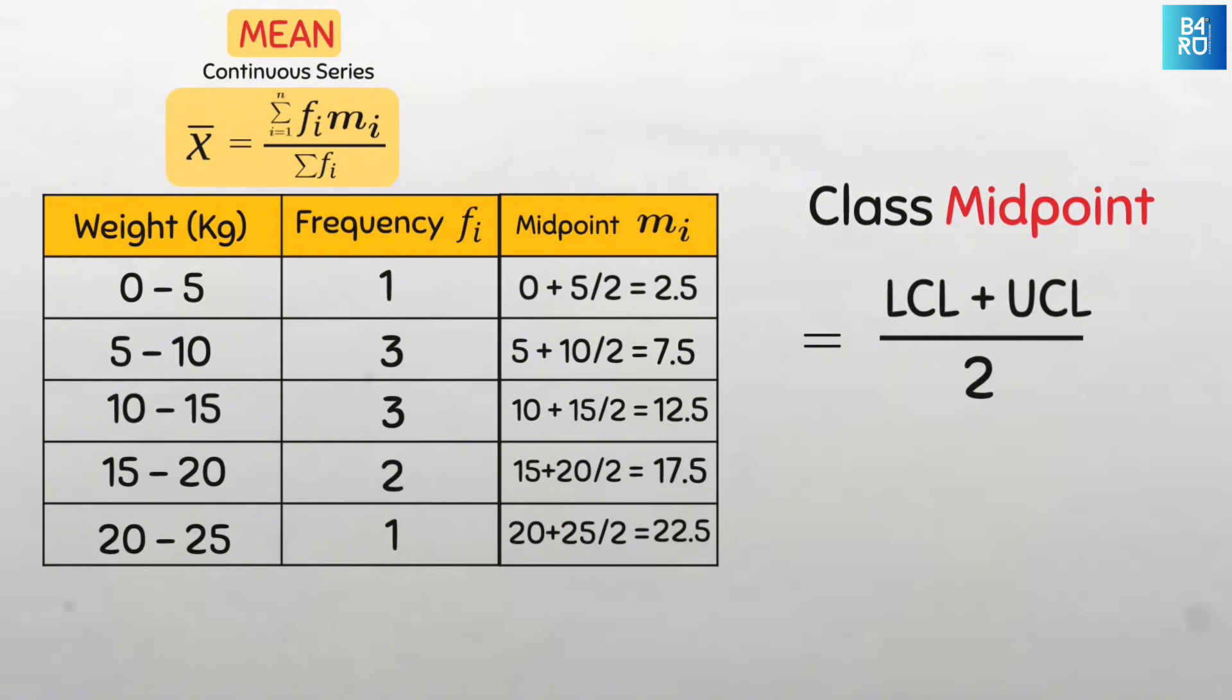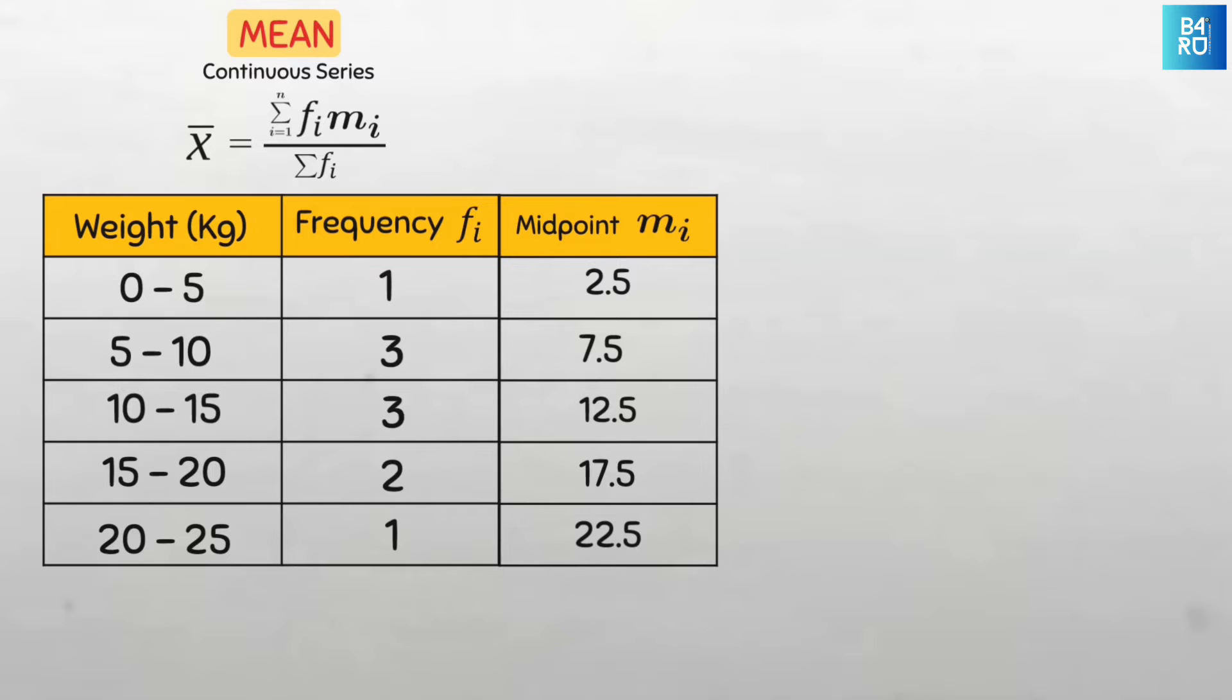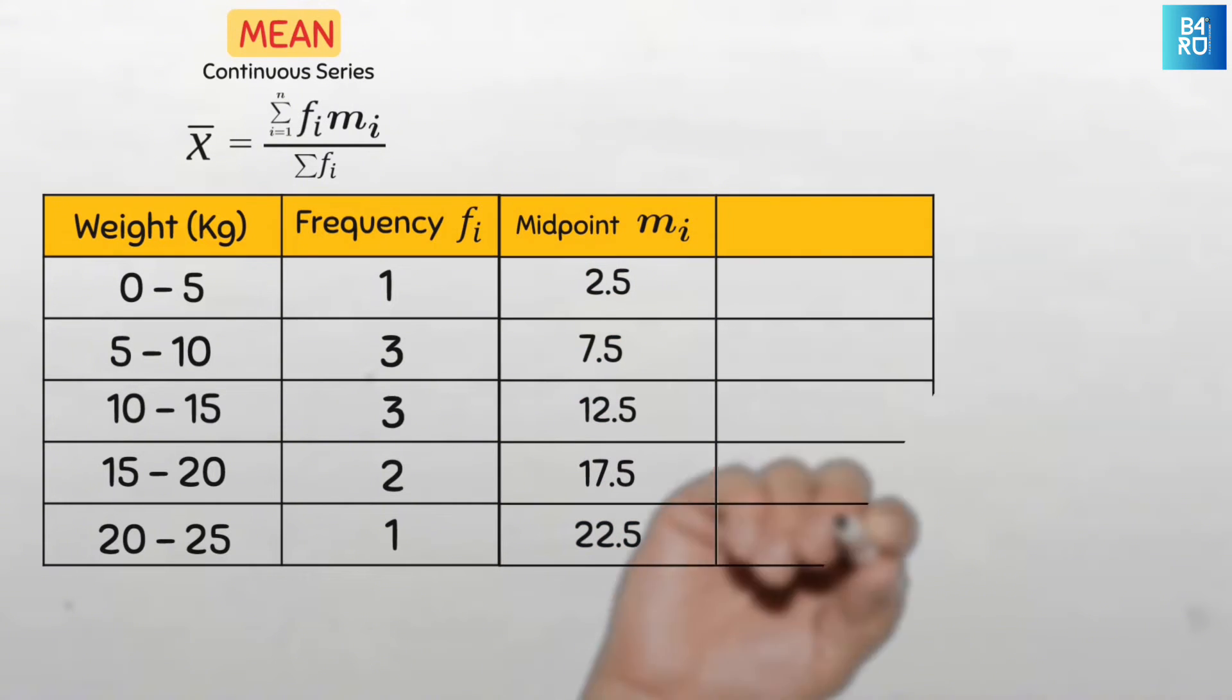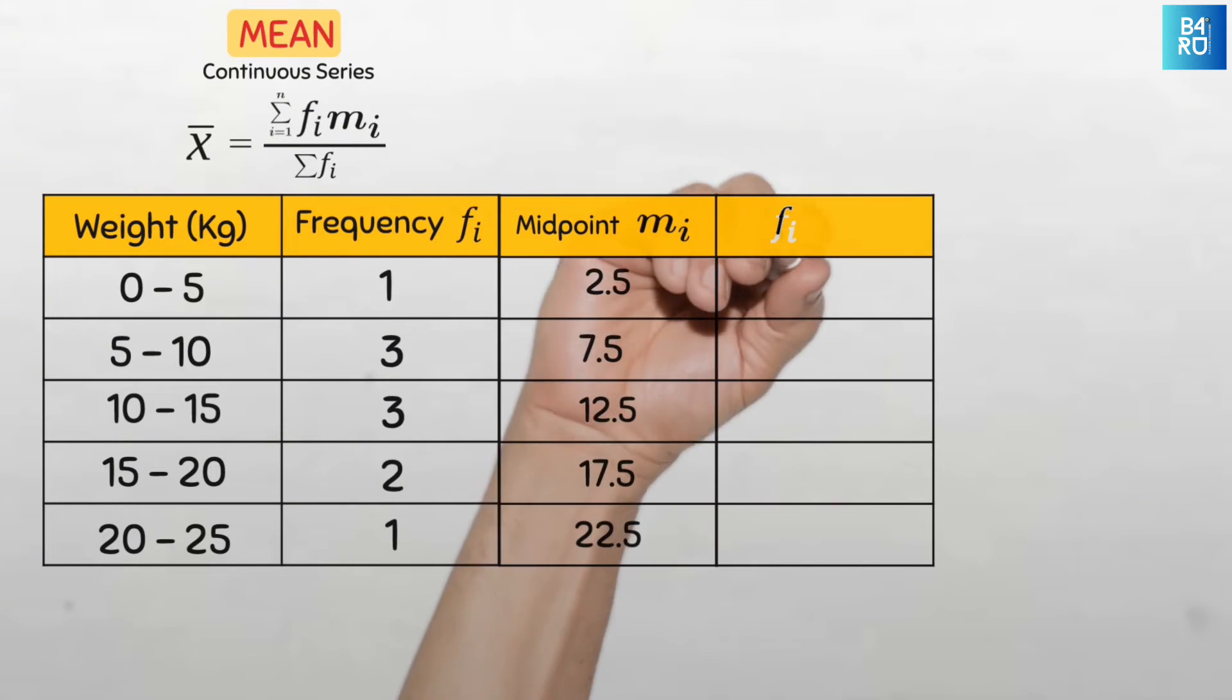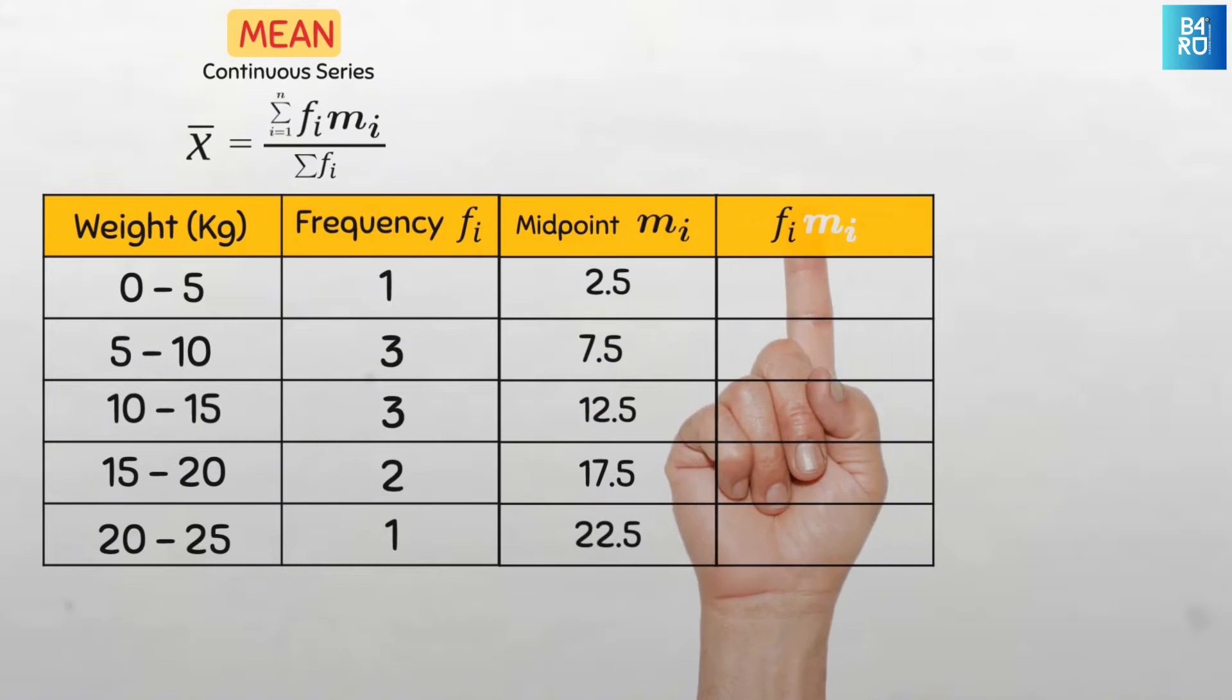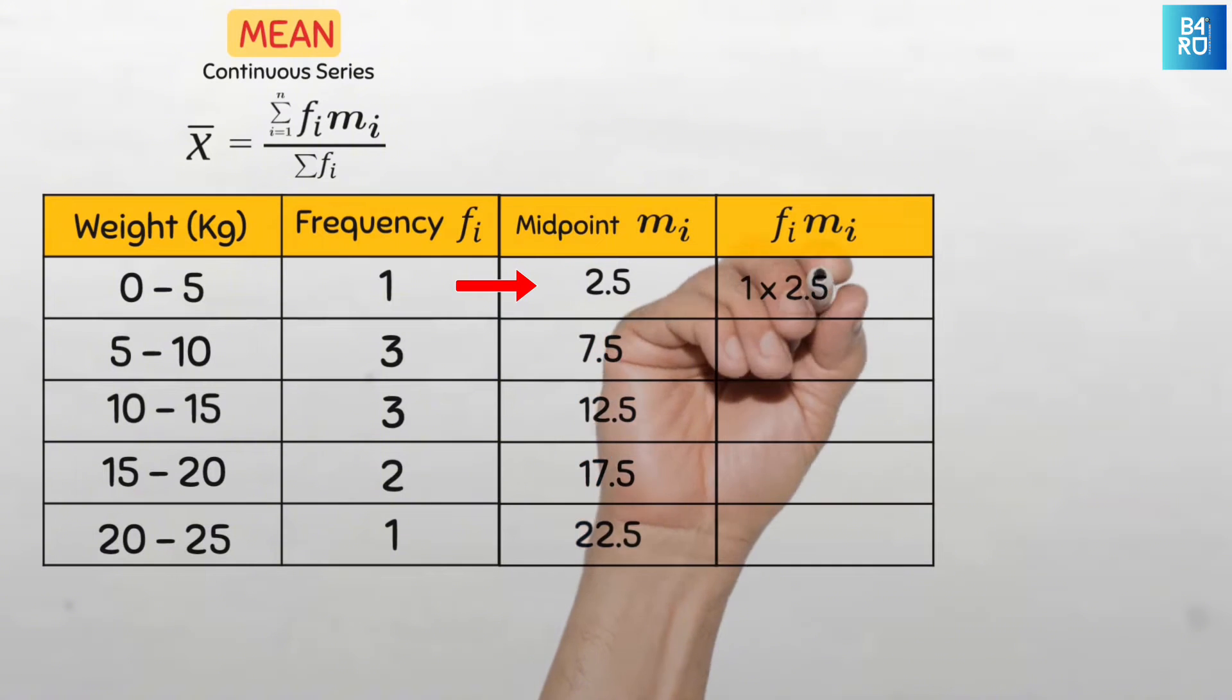Now that we have all the midpoints, our next step will be to find the product of the frequency and the midpoints of each class. So let's create another column here and label it f sub i times m sub i. For the first class, we'll multiply 1 times 2.5 and that's 2.5.